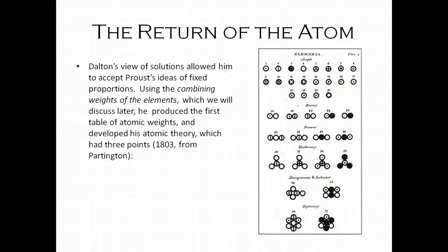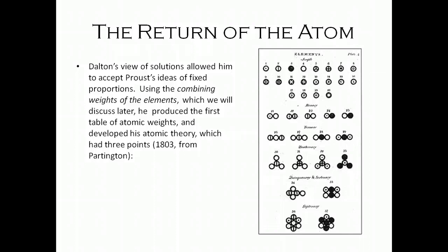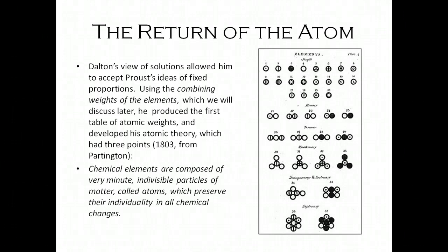He comes up with this theory. By the way, this is a page from his text — these are his symbols for the elements. And you can see the interesting thing he started to do here was put together compounds and molecules, showing that the elements can be joined in simple ratios. The first point of his theory: chemical elements are composed of very minute, indivisible particles of matter called atoms, which preserve their individuality in all chemical changes.